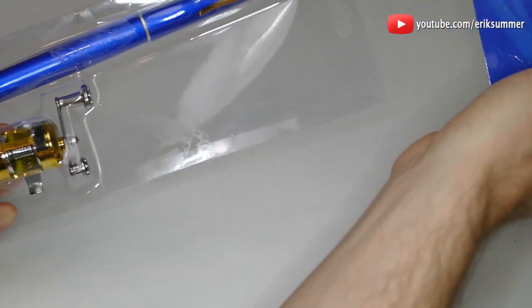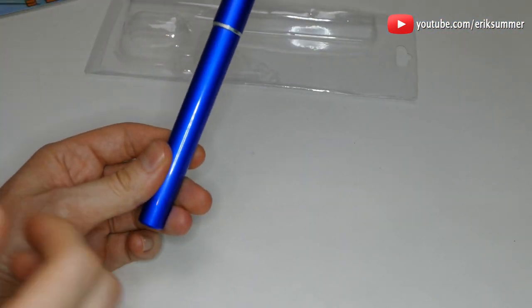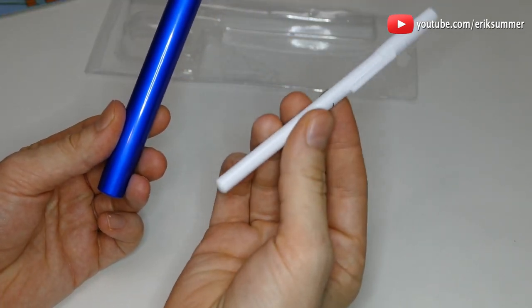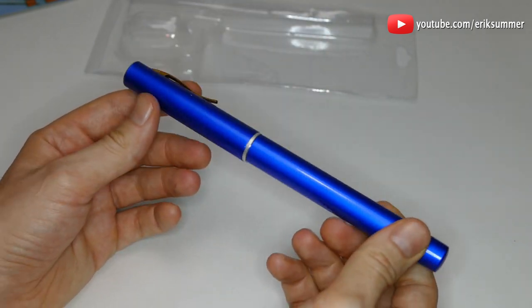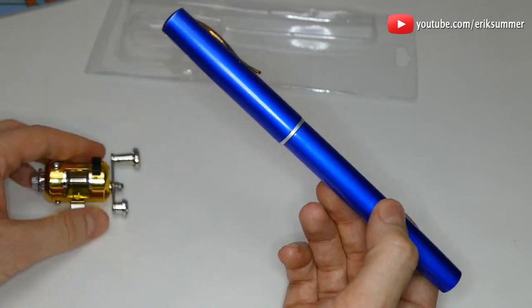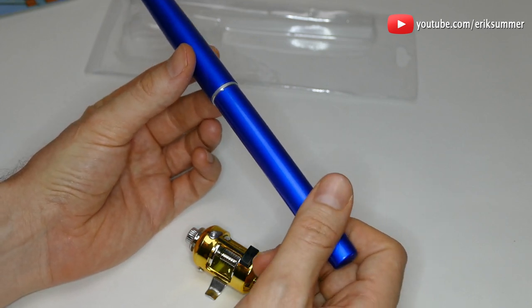All right, first off the size of this thing. It says it's a pen, so to give you some perspective, this is a normal size pen. So it is bigger than a pen but it is really small. It's definitely not going to be as cumbersome as a real fishing pole.